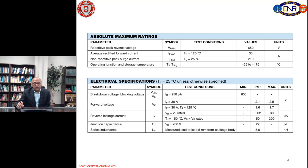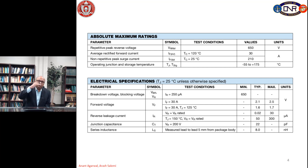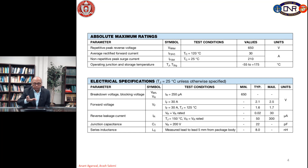The maximum repetitive peak reverse voltage is 650 volts. That means you can apply it in repetitive pulses for a long time and this diode would be able to handle that. Average forward current is 30 amps when the case temperature of the diode is 120 degrees C. The case temperature means the backside conductive metal surface is 120 degrees C, which generally means the junction of the diode would be at a higher temperature.